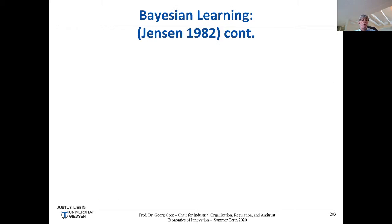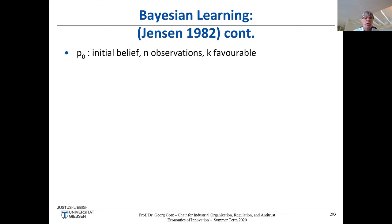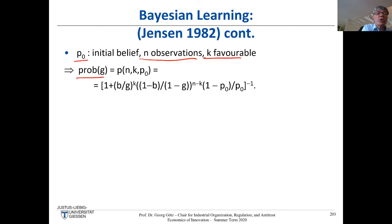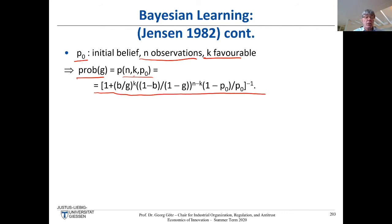Now we want to determine how many people you should ask — for example, whether to upgrade your Windows 10. We start with some initial belief p₀. We have n observations — n people who have updated — and k of these give you a favorable answer, telling you the update is great. The probability that it's a good innovation is then a function of n, the number of observations, k, and p₀.